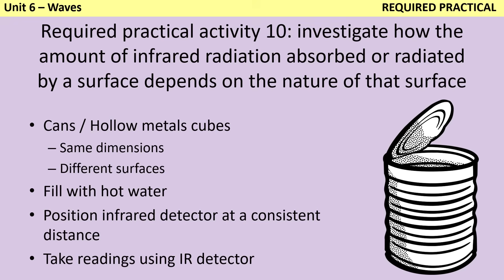Everything else that could be changed needs to be kept the same. You fill the cans or cubes with hot water from the same kettle, so they're starting at the same temperature. And then you use a ruler to position an infrared detector at a consistent distance away from the can. You can also take the temperature of the water as a surrogate for this because if the can's radiating more infrared, then its temperature will drop faster. But the data just isn't as valid.